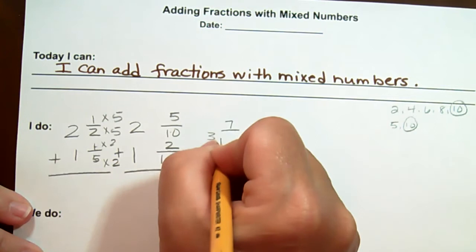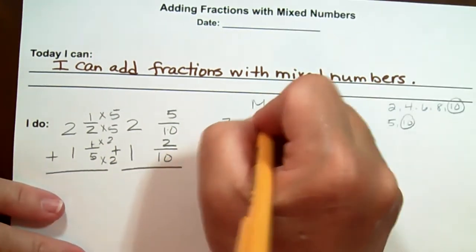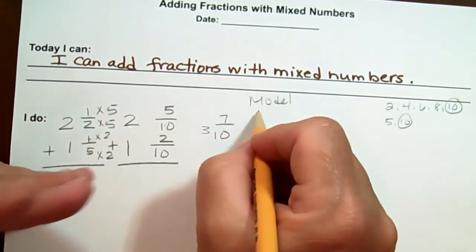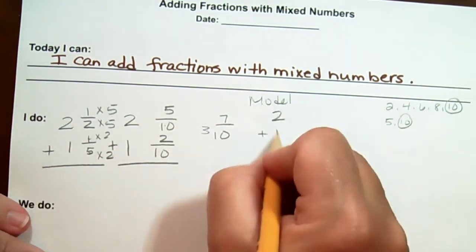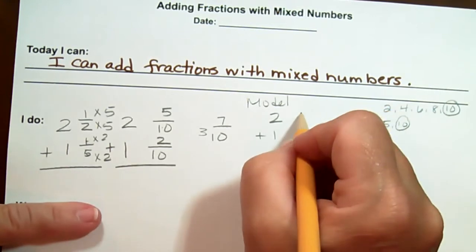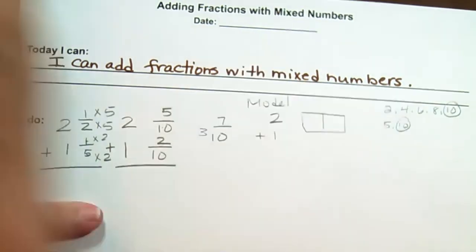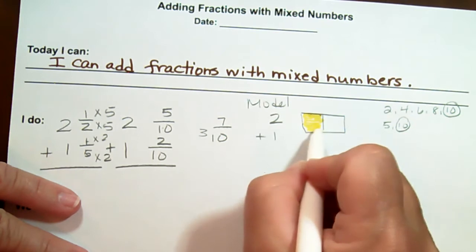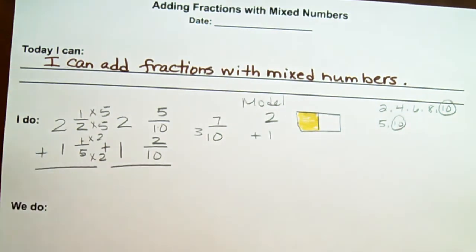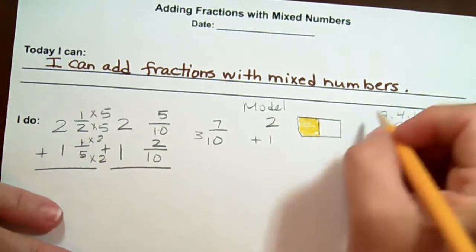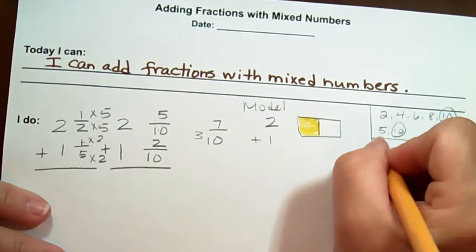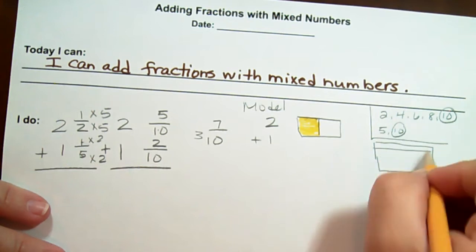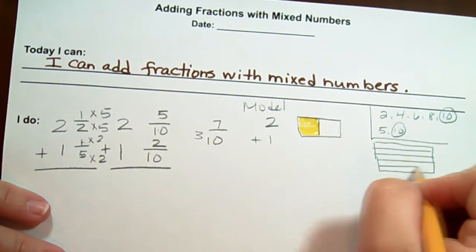I'm going to model this one for you — I'll model one on each page. So we've got two and one. I'm going to model one-half — hopefully you can see that right there. Then beside that one-half, going down below our numbers, I'm going to model one-fifth by drawing five lines.